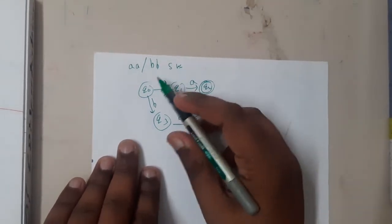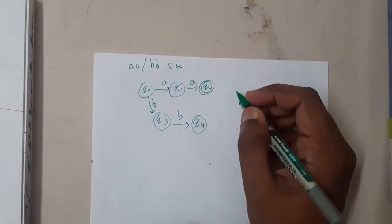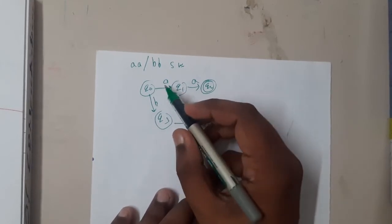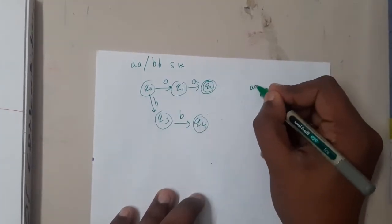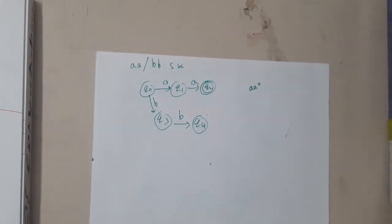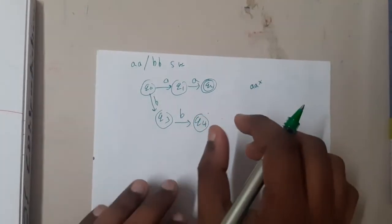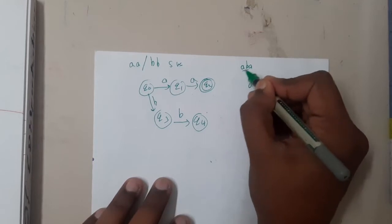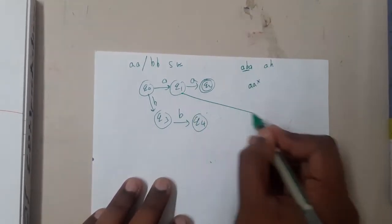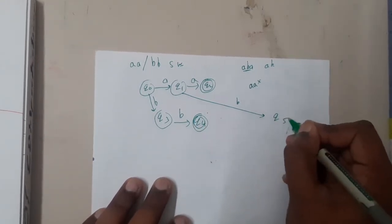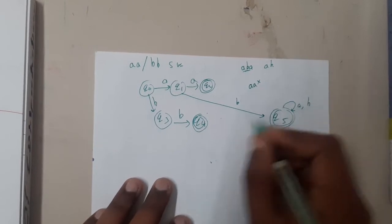These two states are accepted. Now if 'a' starts, the pattern 'aa' is mandatory. But if after one 'a' suddenly 'b' comes — we need to handle that. If we are talking about starting with 'aa', then if 'b' comes after the first 'a' we go to a dead state. So when you find 'b' you go to the dead state q5 — dead state on 'a' comma 'b'.